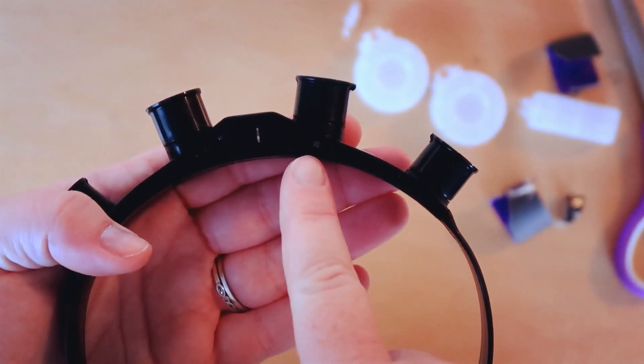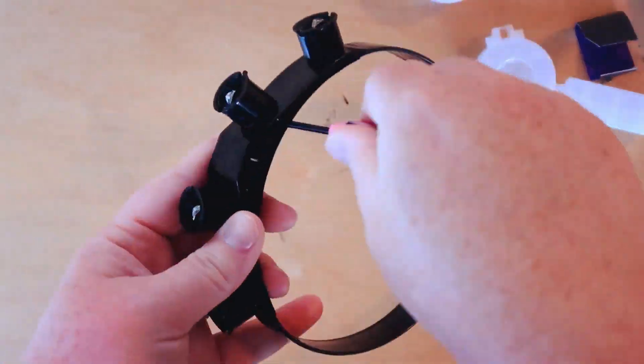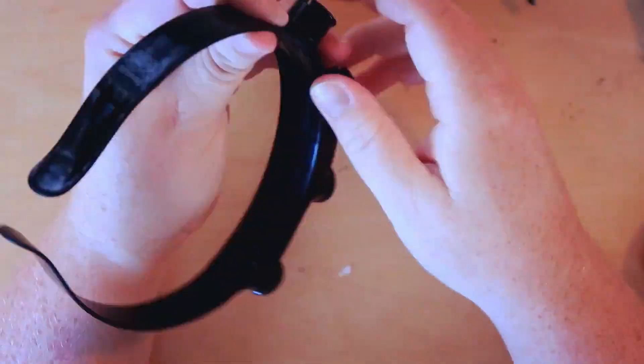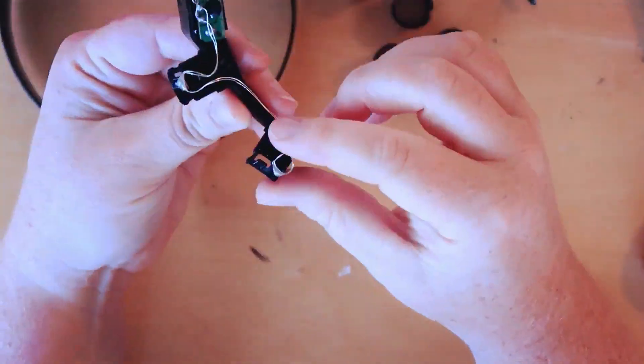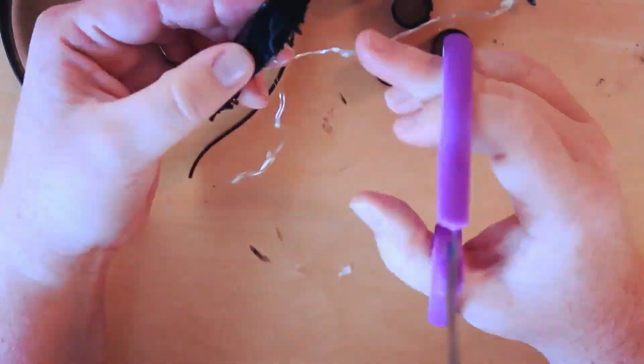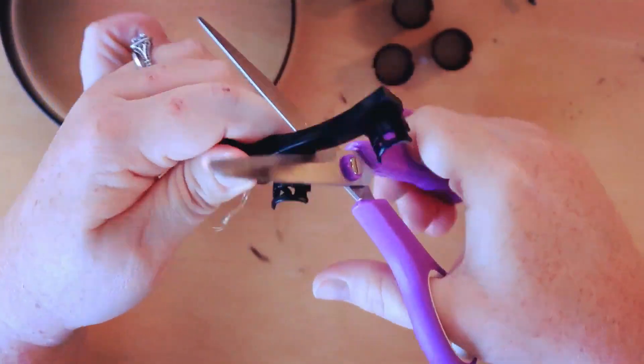There's a little screw that we need to remove in order to get to the lights. We're just gonna remove that screw and then these little circle things pop off and that leaves you with your wire hanging out.